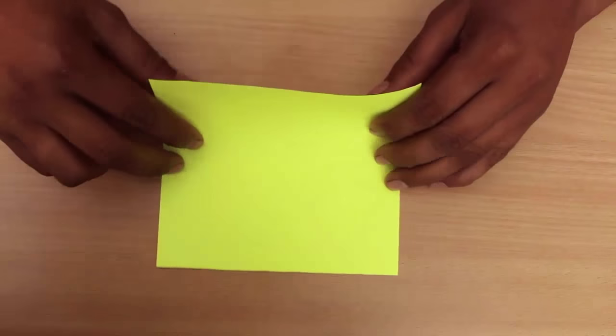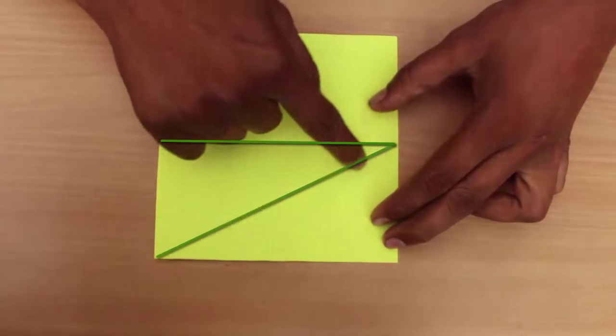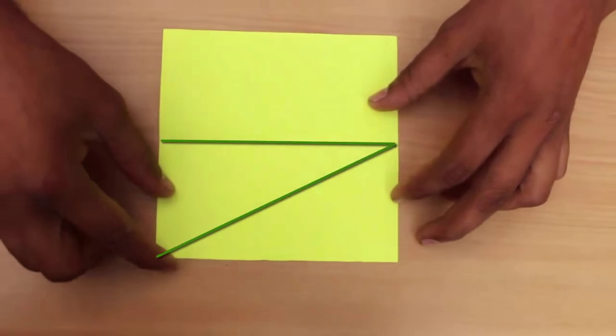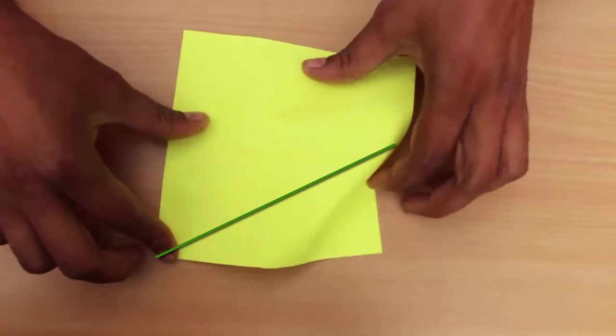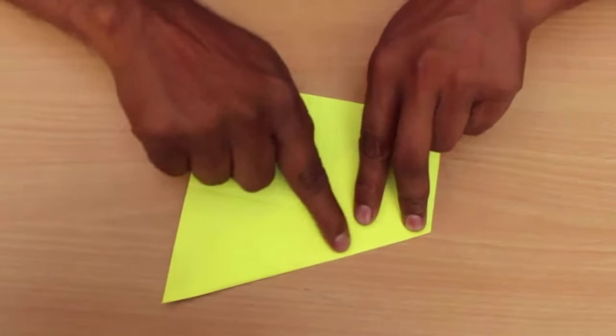First fold the square in half so that you now have two equal rectangles. Now fold along the diagonal of one of these rectangles. Now fold the other side on this diagonal and mark half the side of the square on this diagonal.